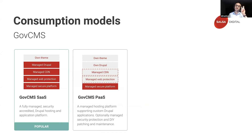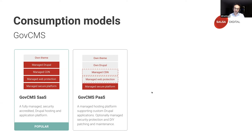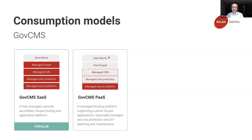GovCMS offers two consumption models. Model one is SaaS — software as a service: a fully managed security-accredited hosting platform with a fully managed Drupal application and the flexibility to maintain your own theme. The second model is PaaS — platform as a service: a managed hosting platform supported by a custom Drupal application, with the choice of managed security and managed CDN. With PaaS, the website owner is responsible for managing their own Drupal, their own theme, and their own patching and maintenance. Currently, of those 309 sites, 200 are on the SaaS model and 109 are on the PaaS model.